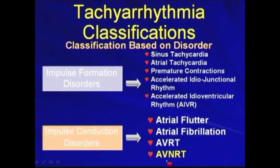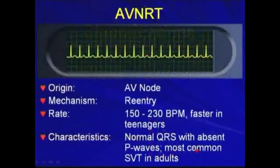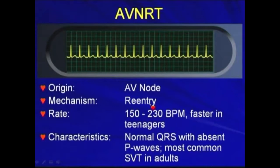We look at the AVNRT, the Atrial Ventricular Nodal Reentry Tachycardia. The origin is from the AV node and is due to reentry. The rate is usually 150 to 230 beats per minute.